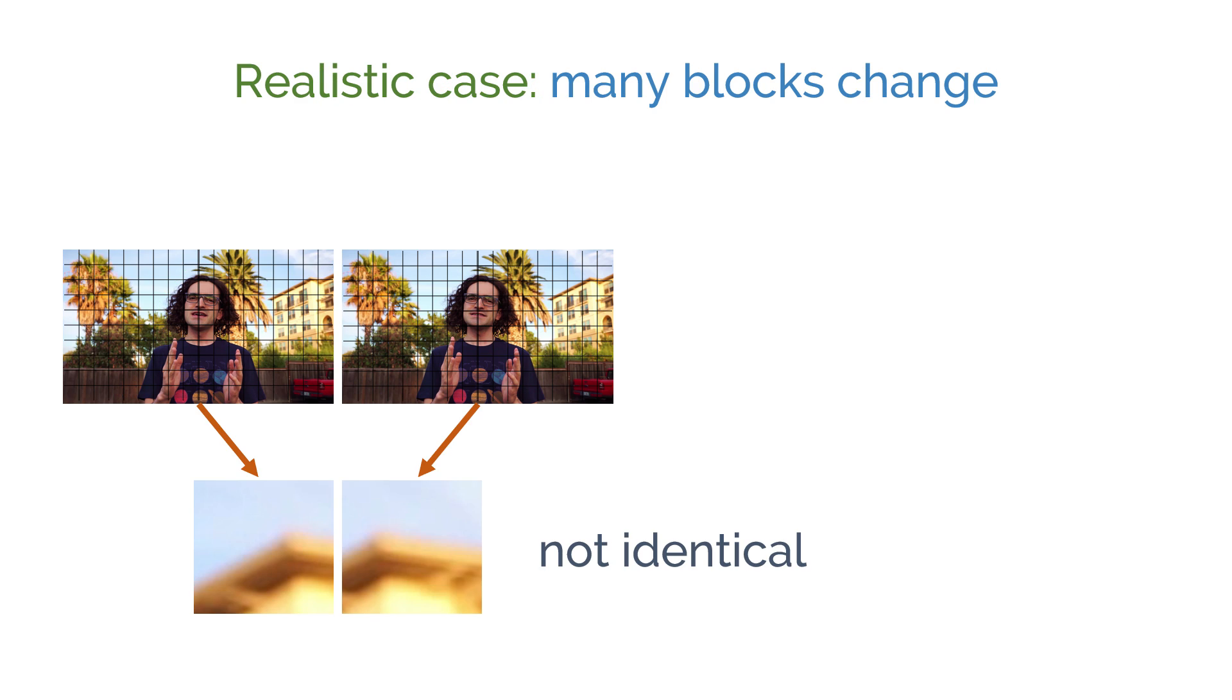What if all blocks change between consecutive frames, but some change a lot and some change a little? Instead of checking whether a block has changed or not, we can search for a given block in the next frame within a neighborhood. This process is called block motion estimation.